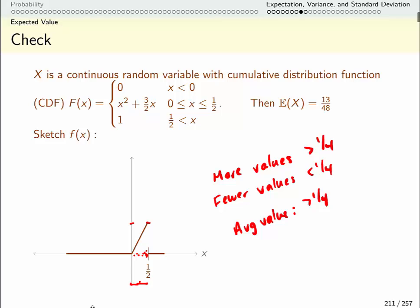So 13 over 48 is strictly bigger than 12 over 48. So at least this makes sense. It seems like it's in roughly the right area.